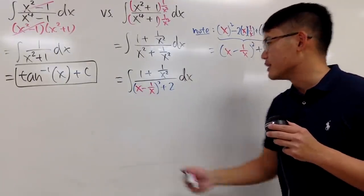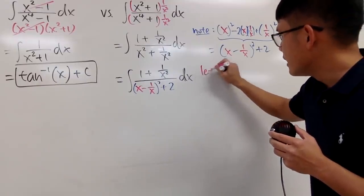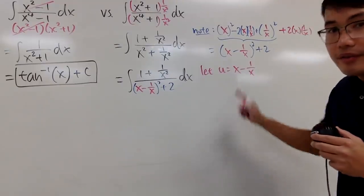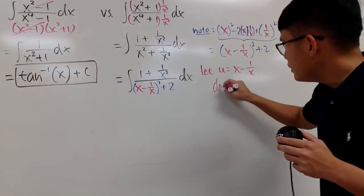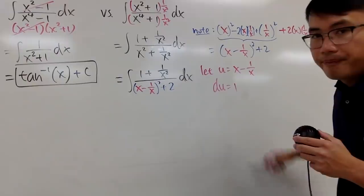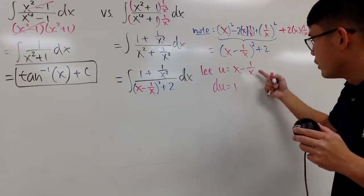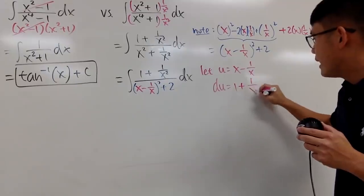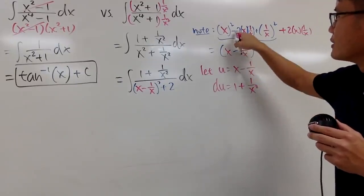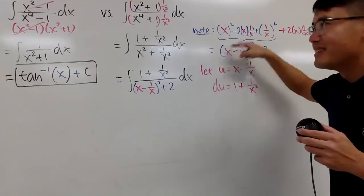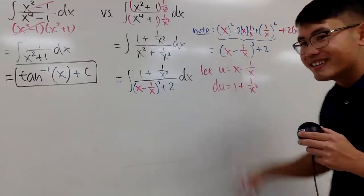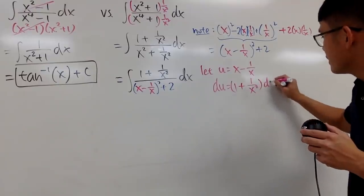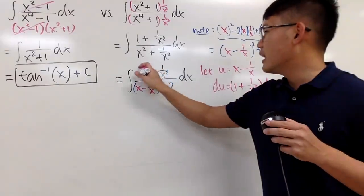We can let u equal this: u = x - 1/x. Differentiate both sides, we get du = (1 + 1/x²)dx. Don't forget the dx. Now you see the whole thing on top is just du. Aha! That's why I chose the minus 2ab, so we end up with the top.